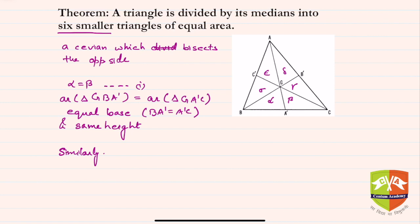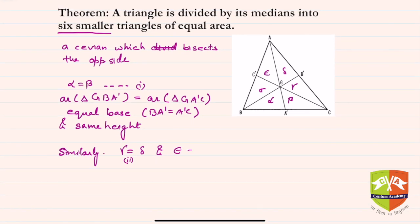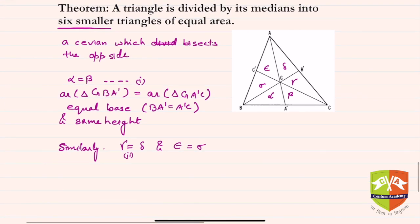So alpha equals beta — that is result one. Similarly, gamma is equal to delta — that is result two. And epsilon is equal to sigma — that is result three.